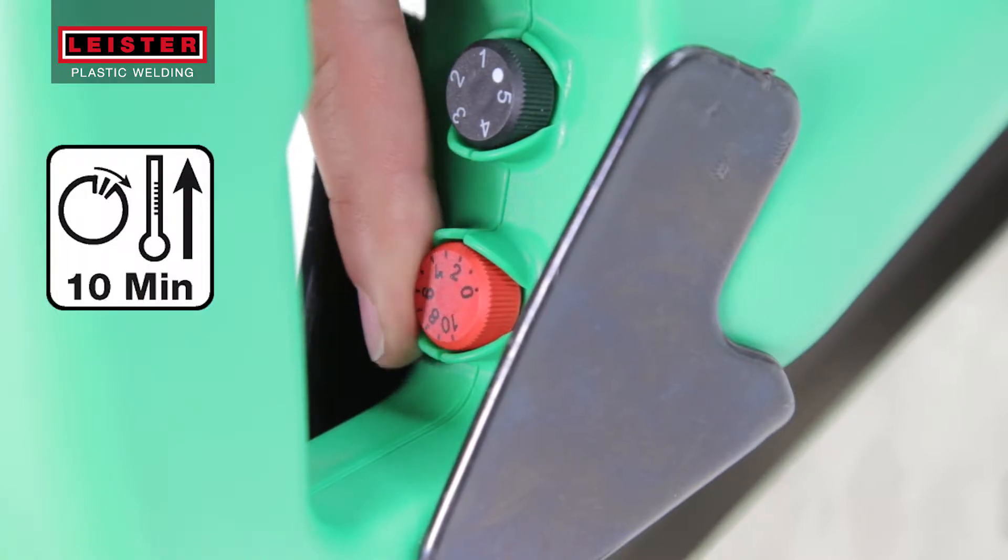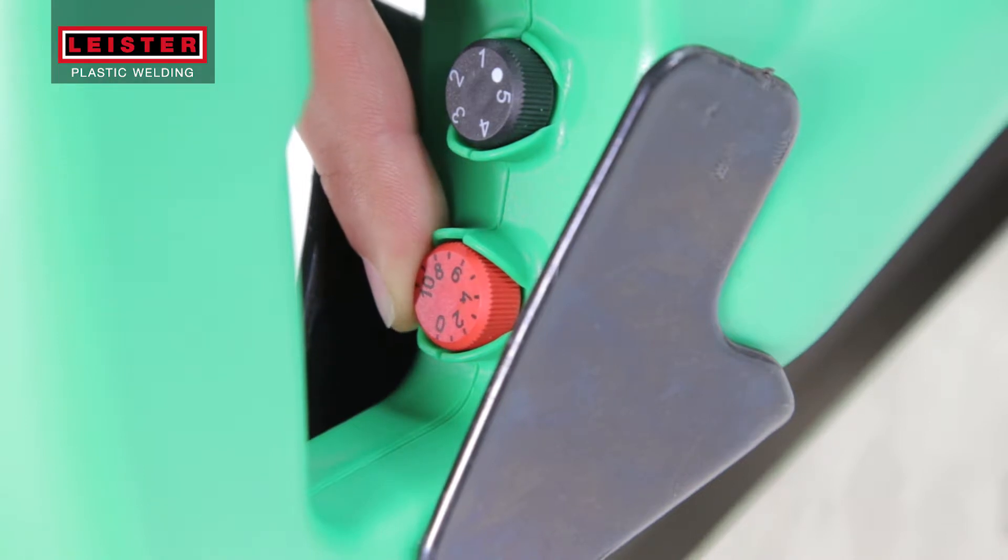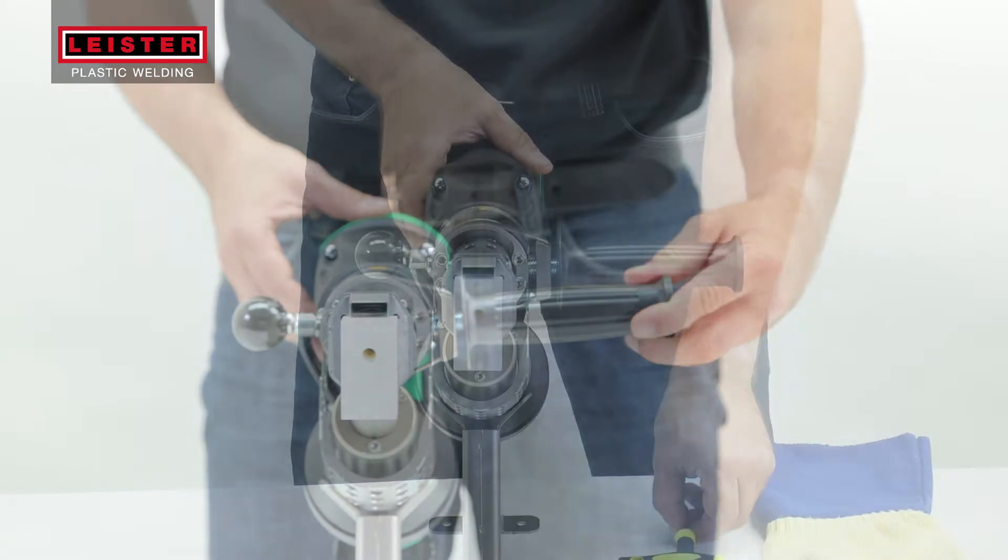Adjust the red temperature potentiometer to position 7 and let the tool heat up for 10 minutes. Meanwhile, position the handle and tighten.